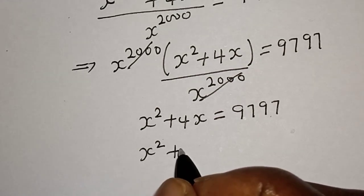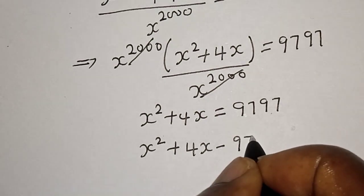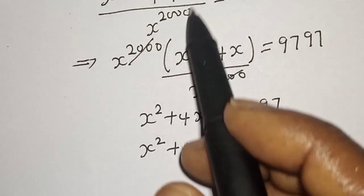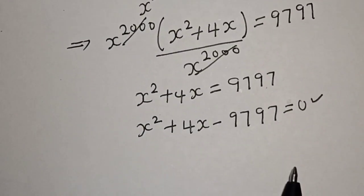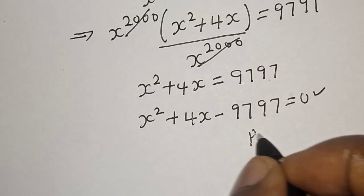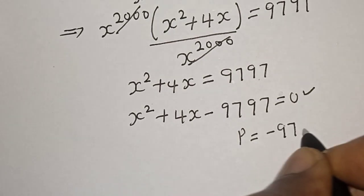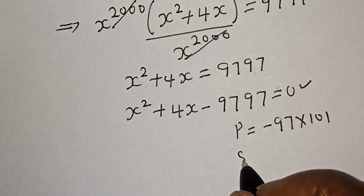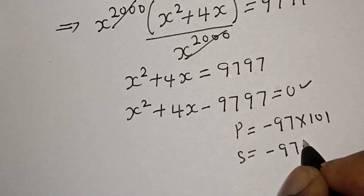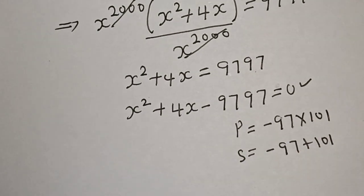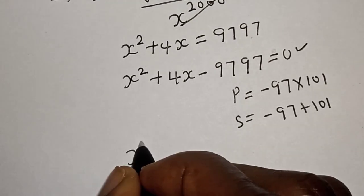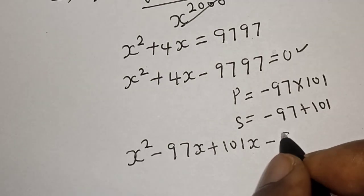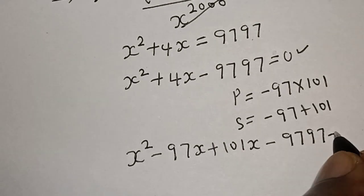Bringing everything to one side: s squared plus 4s minus 9797 is equal to zero. This is a quadratic equation. Let's solve this using the factorization method. The product is minus 97 multiplied by 101, which gives 9797, and the sum is minus 97 plus 101, which gives plus 4. Substituting: s squared minus 97s plus 101s minus 9797 is equal to zero.